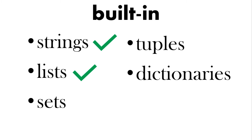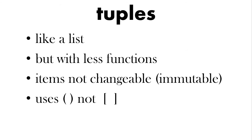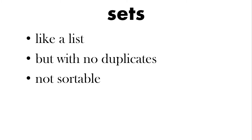We've already looked at strings and lists. Remember, lists you can access using indexes. A tuple is like a list but it doesn't have as many functions and the items are not changeable — you use round brackets rather than square brackets. Sets are also like a list but you're not allowed duplicates and you can't sort sets.